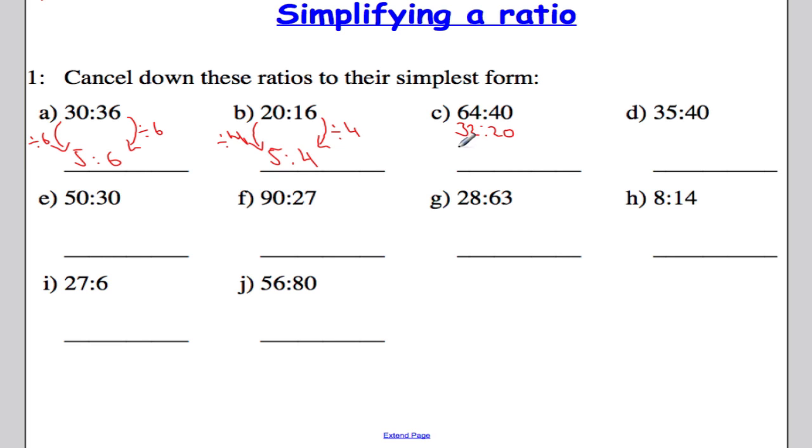32 and 20. I can half them both as well. And I get 16 to 10. But they're still even. So I can half them again. And we get 8 to 5.